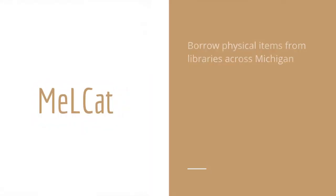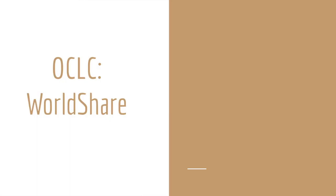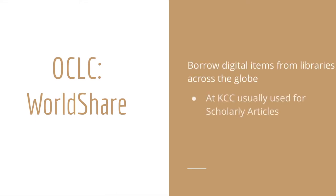You can use MelCat to borrow print materials including books, CDs, and DVDs from libraries across the state of Michigan. And you can use our broader interlibrary loan service through OCLC to request digital articles from libraries just about anywhere.